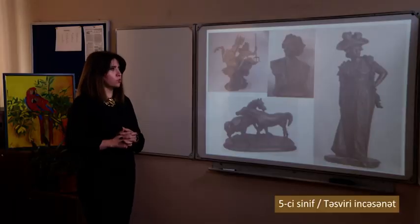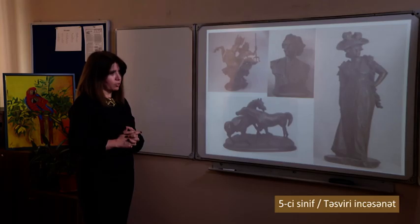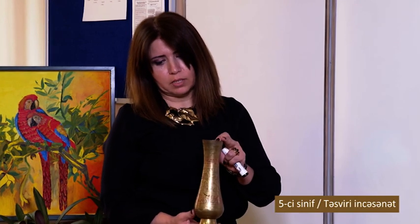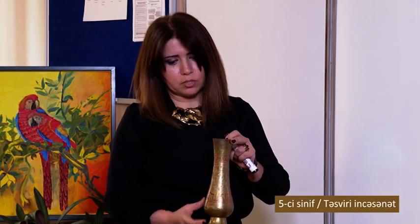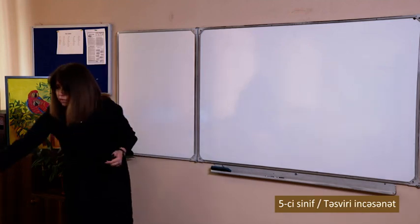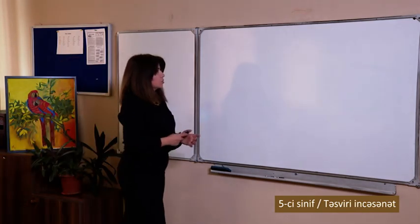Today we will draw two household items: one will be a sərpuş (serving cover) and the other will be a közə (jug). Let's start our work. Before officially starting, I would like to show you an example of artistic metal. Children, you can look at the patterns on it — the material is bronze. Such a pitcher — in Azerbaijan, all items, including those made of artistic metal, looked this beautiful. Now let's start drawing.